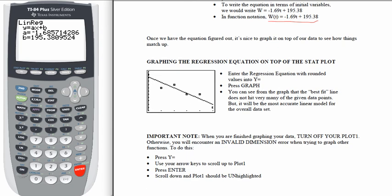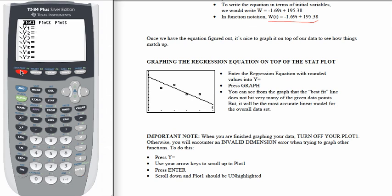Now what we want to do is to plot that equation to graph it using our calculator and see what it looks like compared to the data that we have. So we're going to leave our plot on, and in the Y1, we're going to enter negative 1.69, in this case x, plus 195.38. So there's our regression equation. It is our rounded equation.